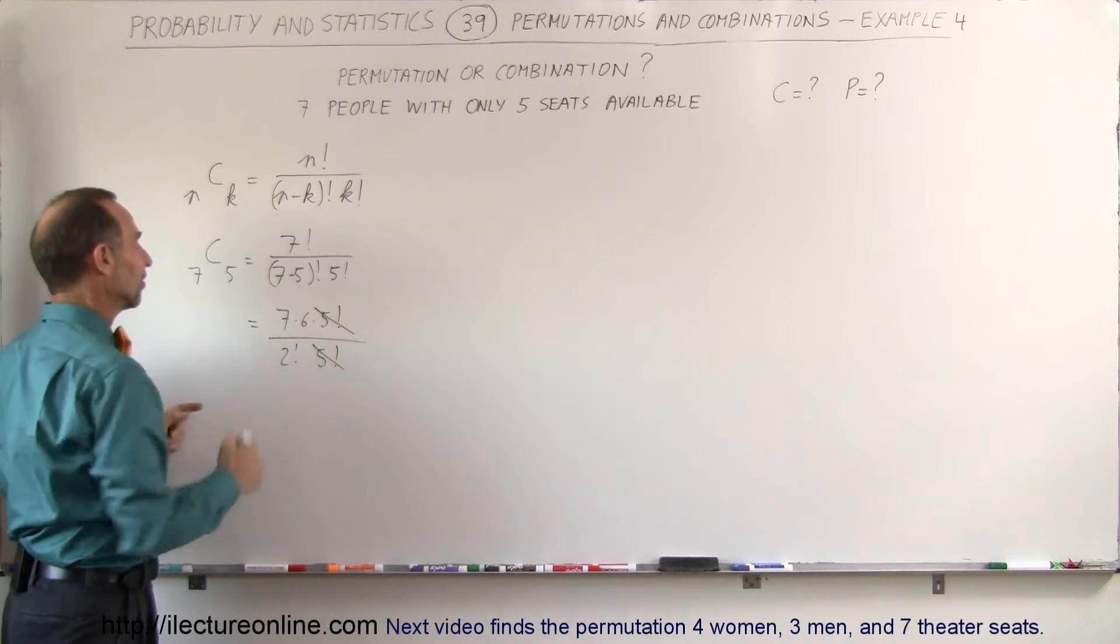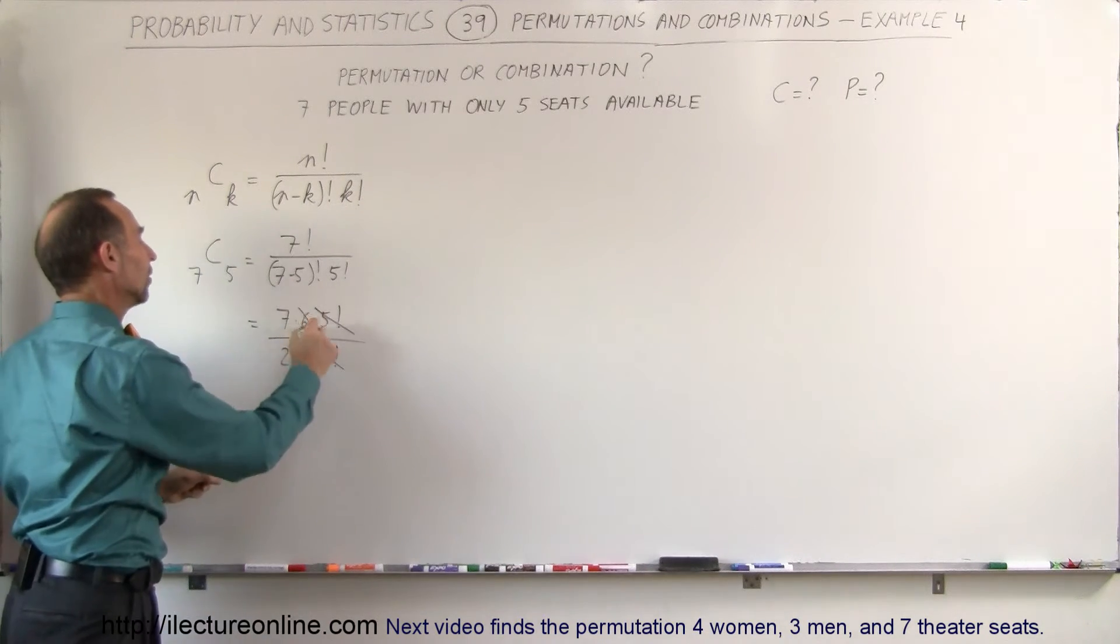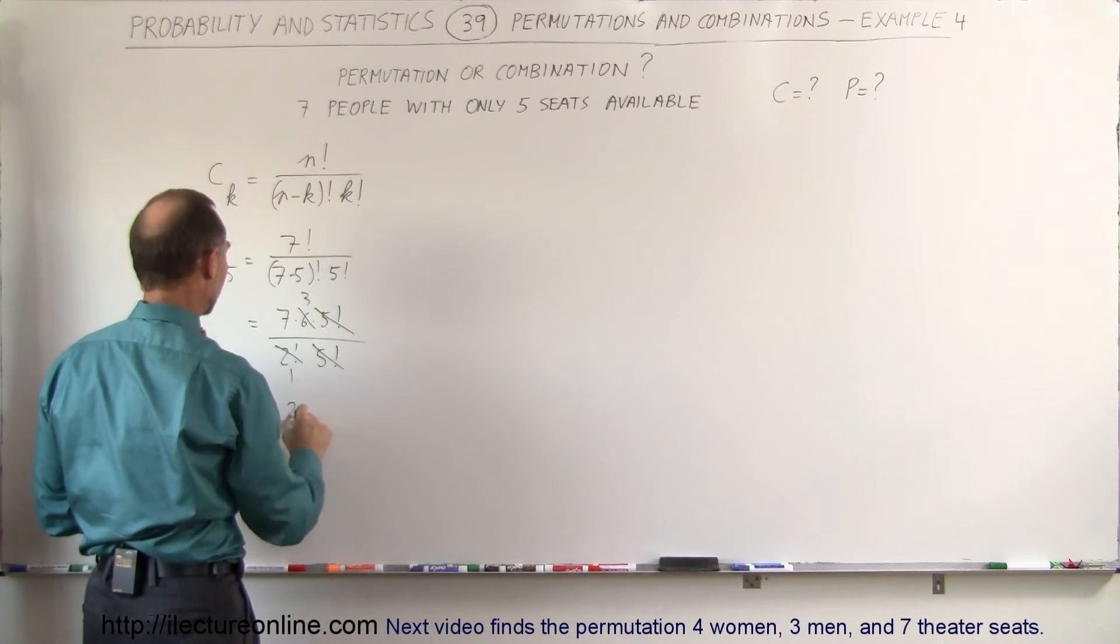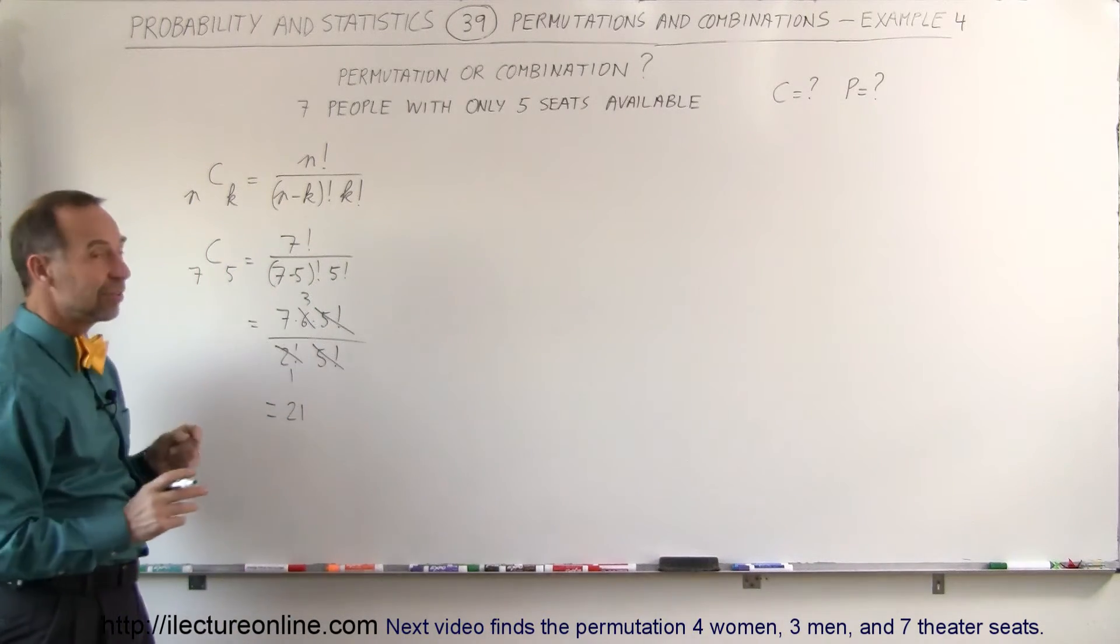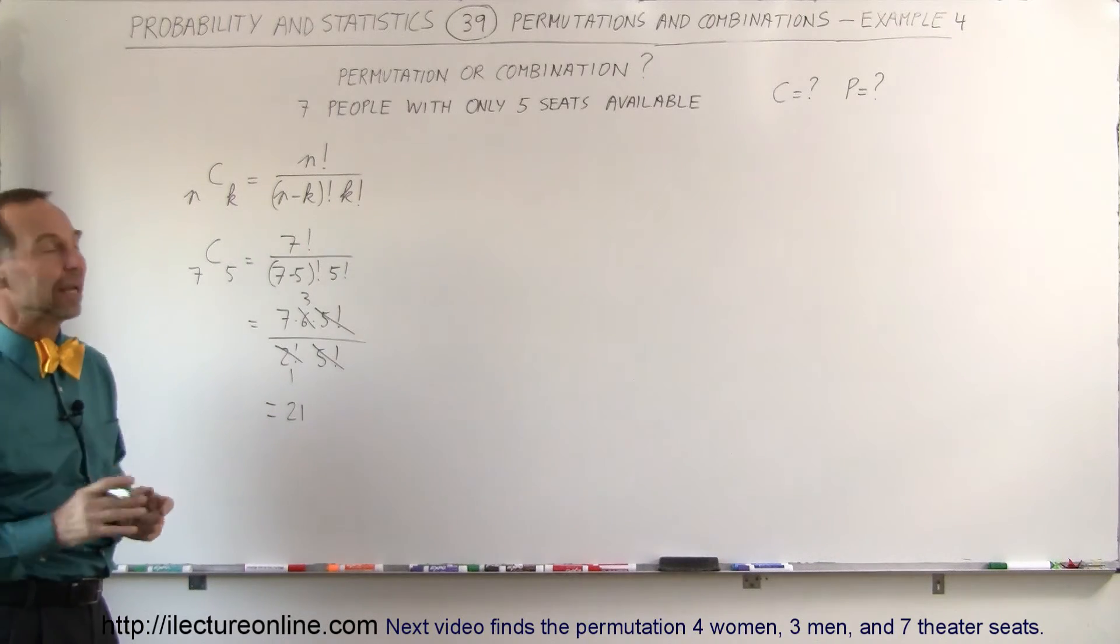We're left with six and seven in the numerator. Two factorial is equal to two, so this cancels out to three, this becomes one, and so the number of combinations is 21. If you have seven people and five seats, there's 21 different ways in which they can be seated if the order doesn't matter.